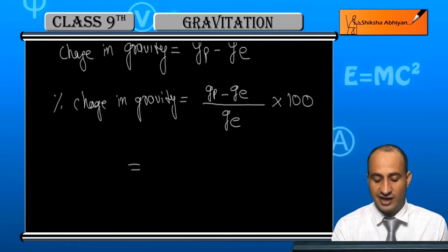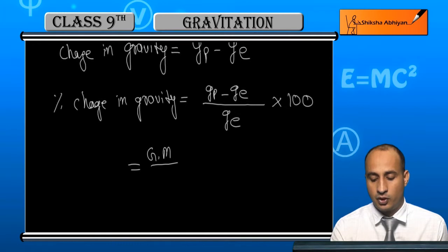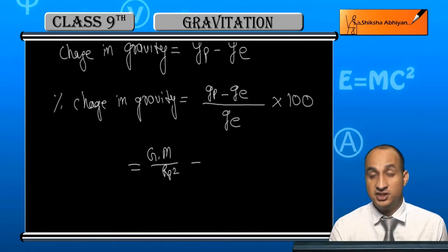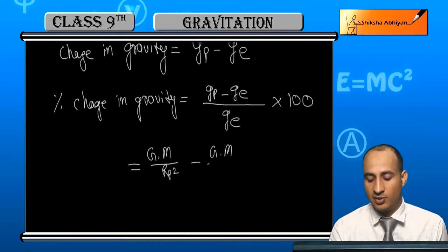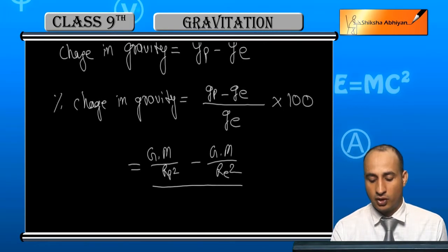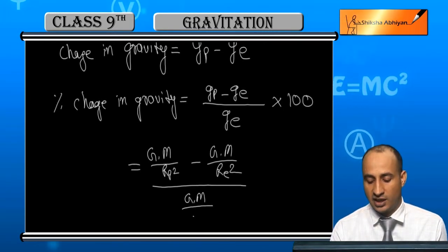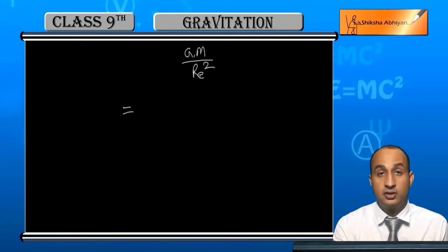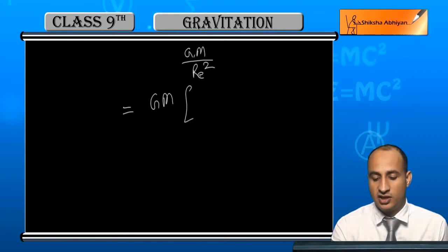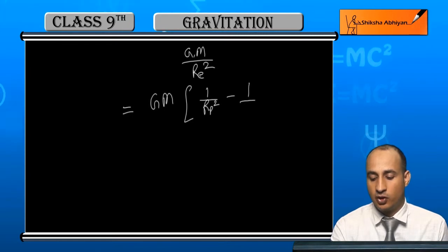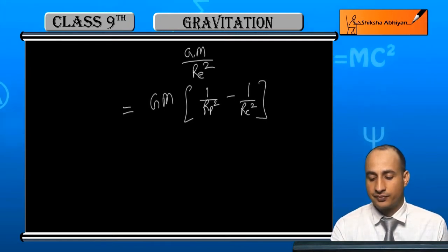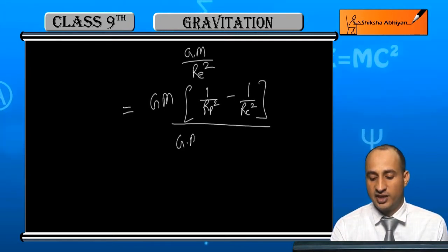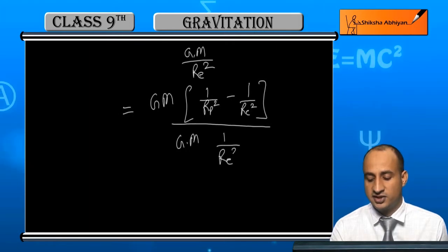Now substitute the values. GP is G times M upon RP squared, and GE is G times M upon RE squared. Take GM as common from the numerator, giving 1/RP² minus 1/RE². The denominator also has GM times 1/RE², so GM cancels out.